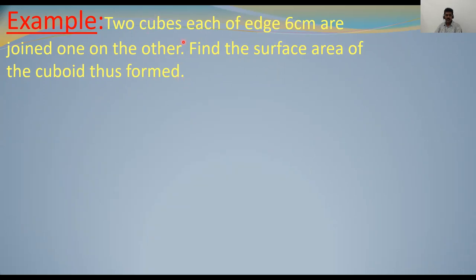See — two cubes are joined, then it becomes a cuboid. This is very important: two cubes are joined and now it becomes a cuboid.